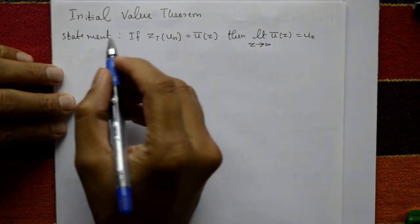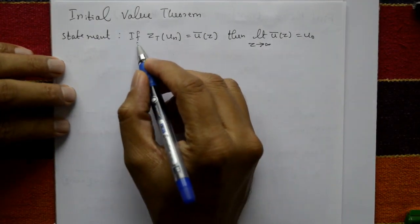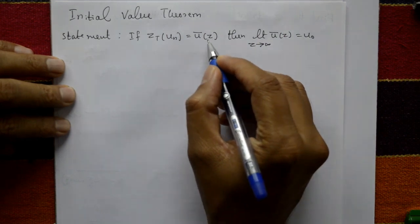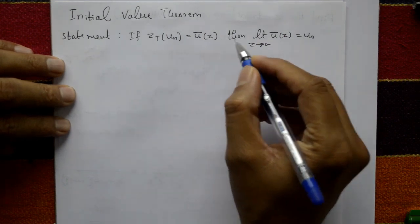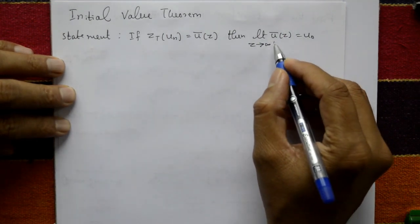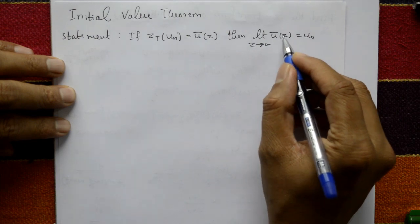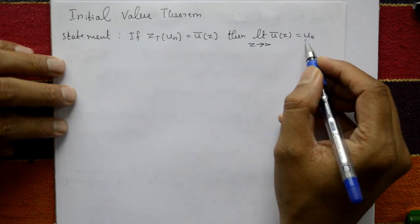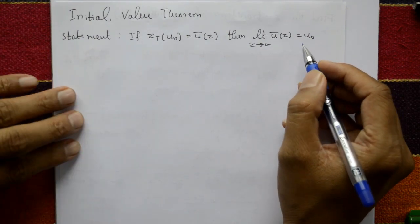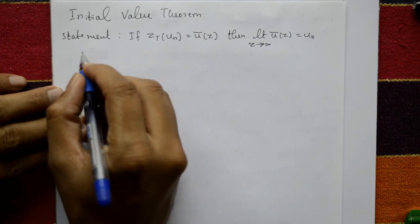Initial Value Theorem statement: if the Z-transform of u(n) is equal to U̅(z), then the limit as z tends to infinity of U̅(z) is equal to u₀. We will show that this statement holds.